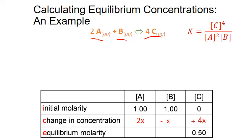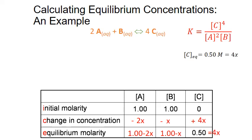We then define our equilibrium molarities for A and B as the initial combined with the change. A starts at 1.00 moles per liter and decreases by 2x, giving a formula of 1.00 minus 2x for the equilibrium concentration of A. B is 1.00 moles per liter minus x. For C, we started at zero and increased by 4x. This implies that our measured equilibrium concentration, 0.50, equals 4x. Solving: 0.50 equals 4x gives us x = 0.125 moles per liter.